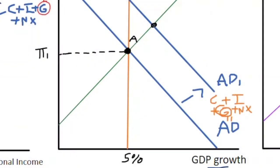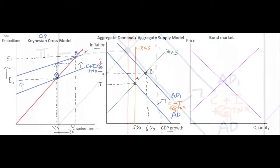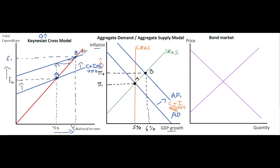We have a new equilibrium point at point B in the short run. In the short run the inflation rate will rise in the economy due to the extra spending, and at the same time the GDP growth rate will also rise. The increase in expenditure in the short run is probably due to extra debt on the government's behalf, so how are they financing this government spending increase? They are financing it through bond issuance — government bonds on the bond markets.